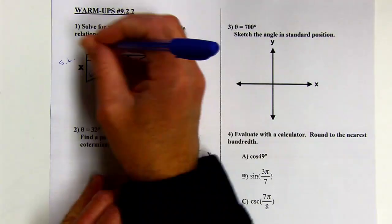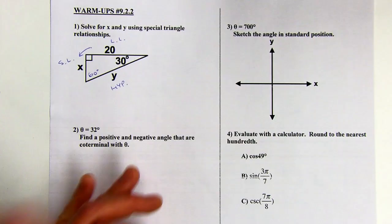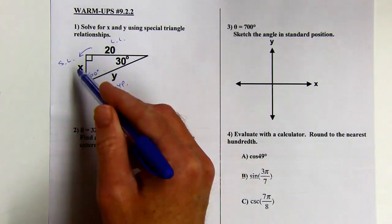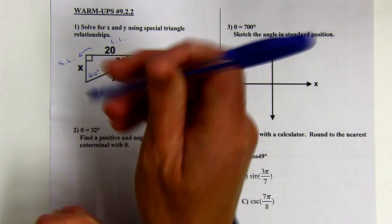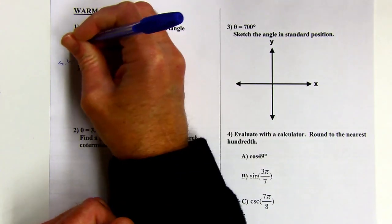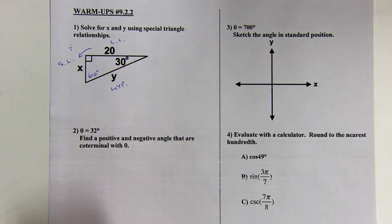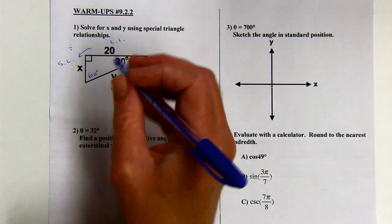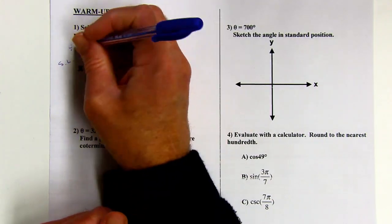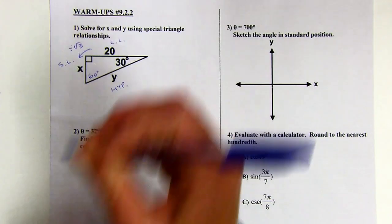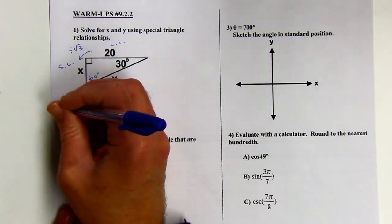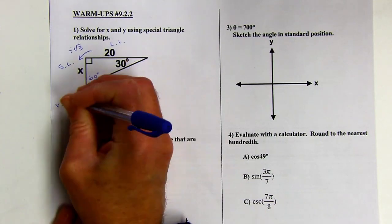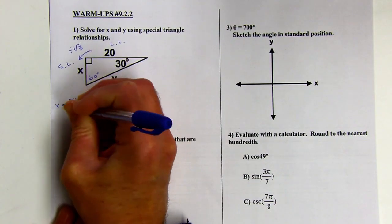So when I don't have the short leg, I want to get it as quickly as I can. So I'm going to go from the long leg to the short leg. Well, it's going to be getting smaller, so I'm going to be dividing by something, not multiplying. And then what we're going to divide by here is the square root of 3. So X is going to equal 20 divided by the square root of 3.